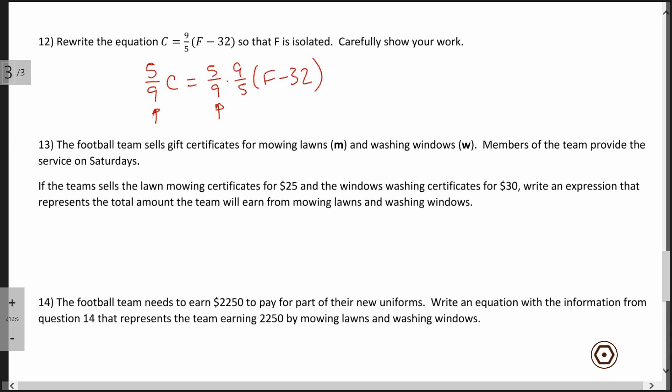So this equation becomes, after I clean it up a bit, (5/9)C = F - 32. That's nice, because all I've got to do now, remember, my goal is to get F isolated.